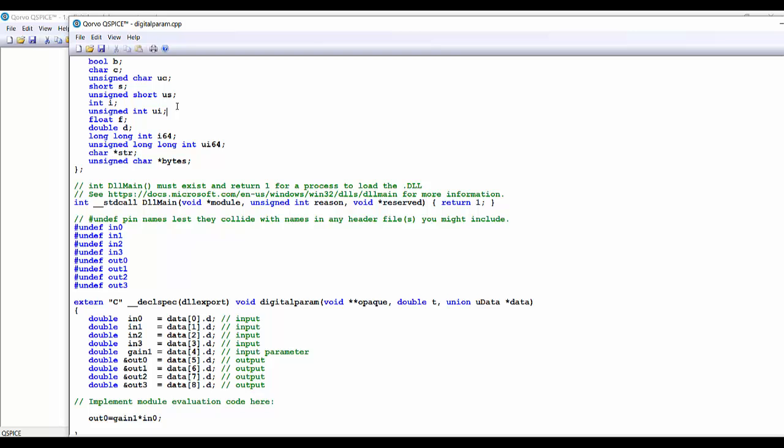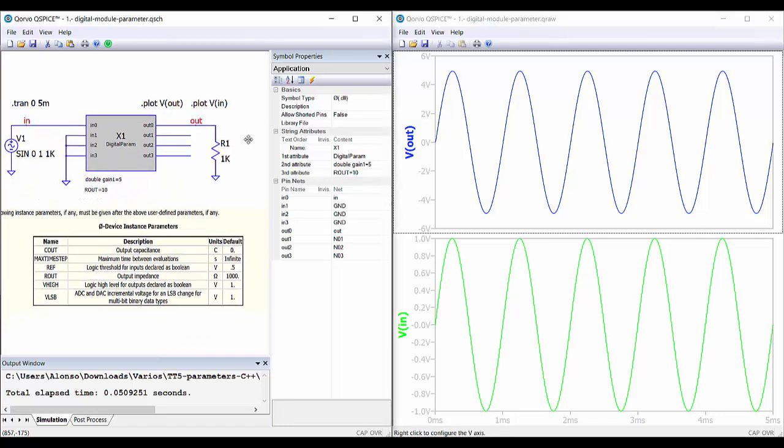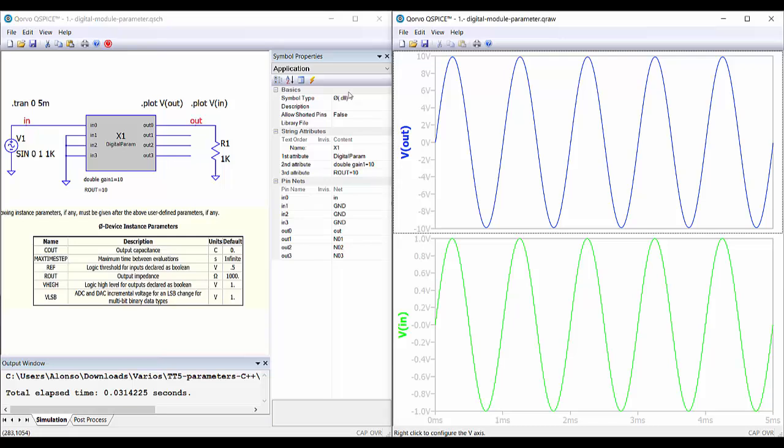Now we run the simulation and we can see that now we have 5 volts peak at the output. But now we have the parameter here, so we can change this, for example, to 10. Run again and see that we have 10 volts peak at the output.